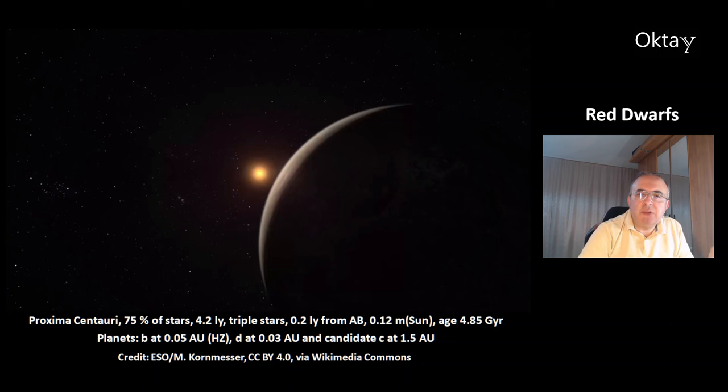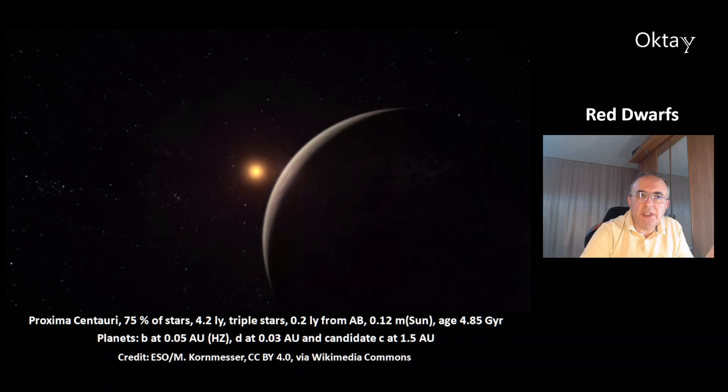Hi, welcome to today's video about red dwarfs, also called M-stars. This is a nice example of an M-star — it's the closest star to the sun, Proxima Centauri. 75% of the stars in the universe are M-stars, red dwarfs.